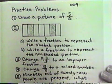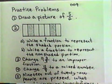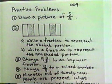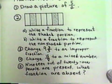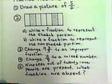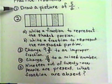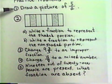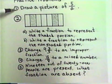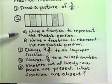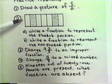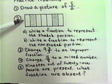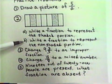Since we've talked about writing different things, I have five practice problems that I want you to do to see if you understand. The first one says to draw a picture of the fraction five-halves. The second one asks you to write a fraction to represent the shaded portion of the picture here, and then write a fraction to represent the non-shaded portion.